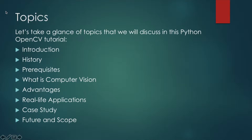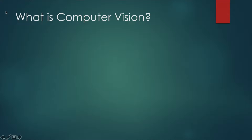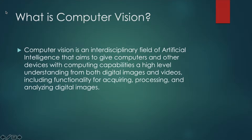We'll also see a case study and future scope. So what is computer vision? Computer vision is an interdisciplinary field of artificial intelligence. With computers and other high-level computing devices, it gives a high-level understanding from both digital images and videos. From computer vision we can acquire, process, and analyze digital images. Basically, we have a digital image and we want to process it and find relevant information from it — that is what computer vision is.